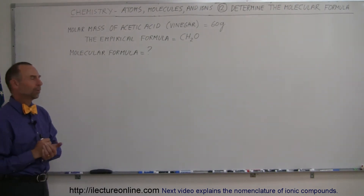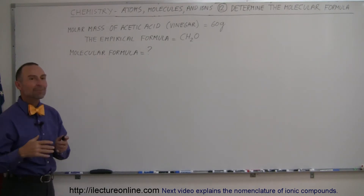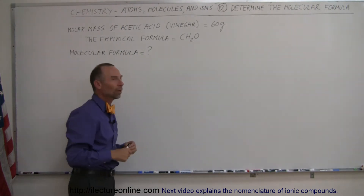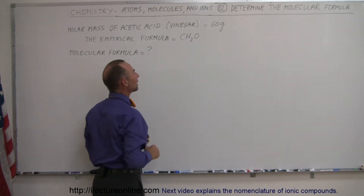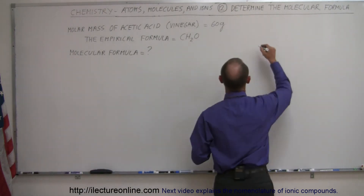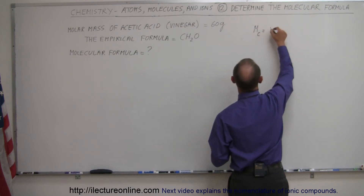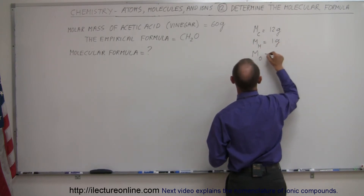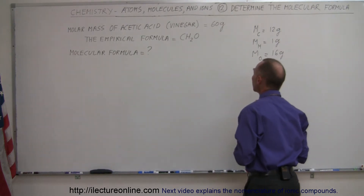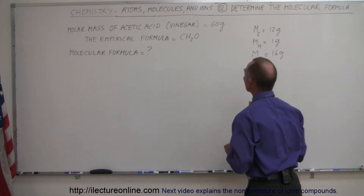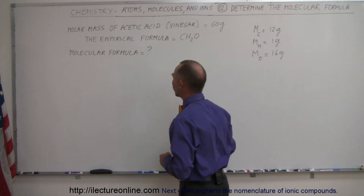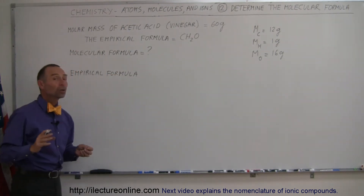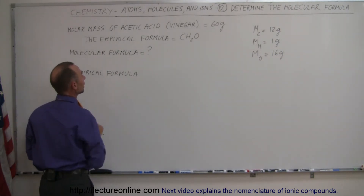So how do we find the molecular formula? Well, what we need to figure out is what is the molecular mass of the empirical portion of the molecule. If this was the molecule, what would its mass be? Since we know that the molecular mass of carbon is about 12 grams, the molecular mass of hydrogen is about 1 gram, and the molecular mass of oxygen is about 16 grams, we can figure out with this ratio what the total mass would be if this was the formula of the molecule. Using the empirical formula, we're going to figure out the mass the molecule would have if it had this formula as a molecular formula.